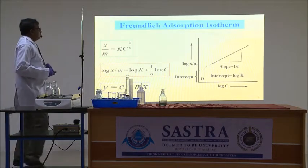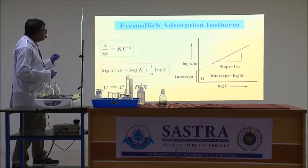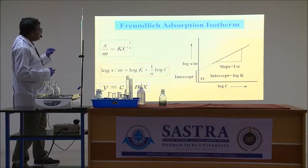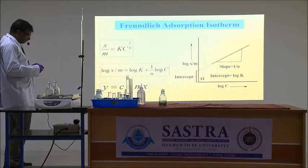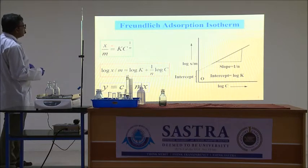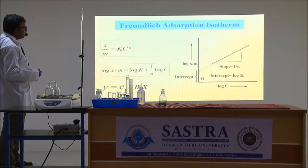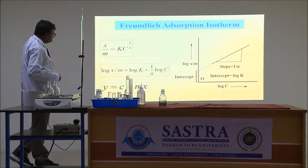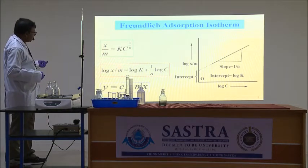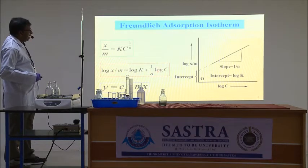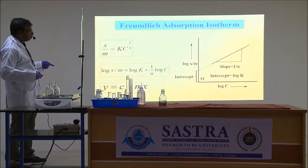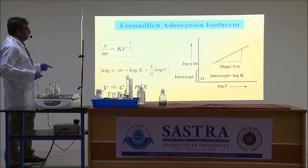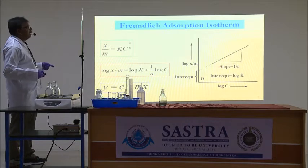Now let us see what is the Freundlich adsorption isotherm. The Freundlich adsorption isotherm tells us empirically how the extent of adsorption varies with the concentration of the adsorbate. Mathematically, it is represented by X by M equal to K times C to the power of 1 by N, where X by M is the extent of adsorption, C is the concentration of the adsorbate, and K and N are empirical constants. If we take log of both sides, we get log(X/M) = log K + (1/N) log C. This is a straight line equation like Y = C + NX, so plotting log(X/M) against log C gives a straight line where log K is the intercept and 1/N is the slope.